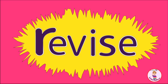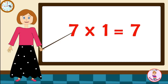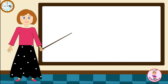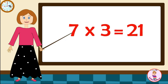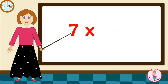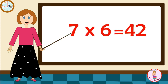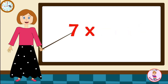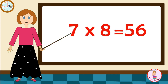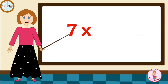Let's revise it one more time. Come on! Seven-one's are seven. Seven-two's are fourteen. Seven-three's are twenty-one. Seven-four's are twenty-eight. Seven-five's are thirty-five. Seven-six's are forty-two. Seven-seven's are forty-nine. Seven-eight's are fifty-six. Seven-nine's are sixty-three. Seven-ten's are seventy.